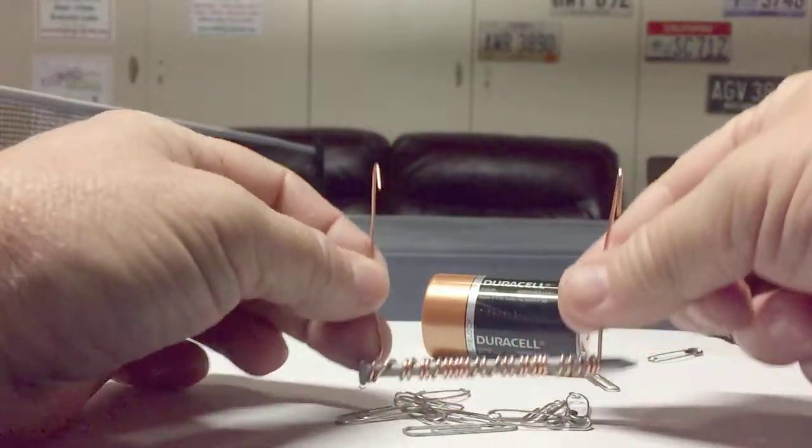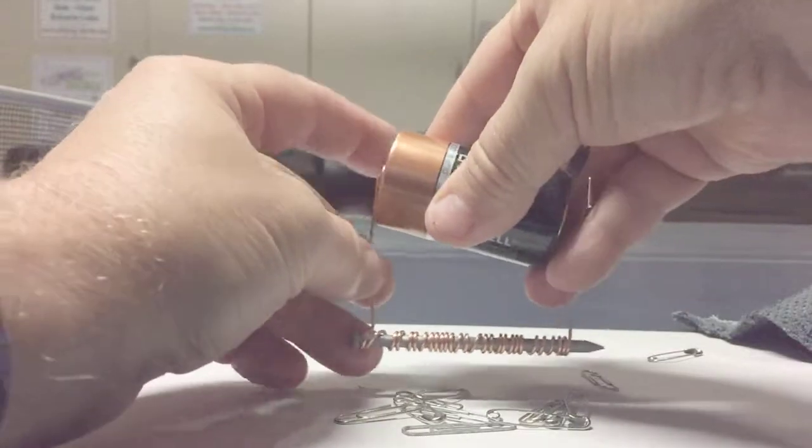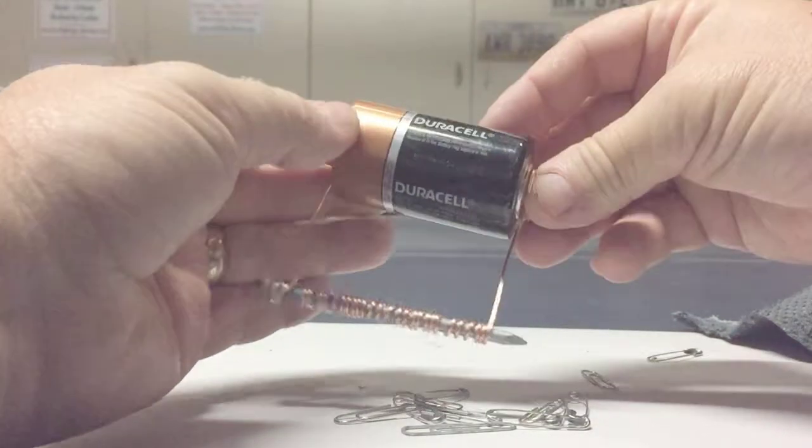When I remove the battery, it's not magnetic anymore. This is because electricity is not flowing through the copper without the battery.